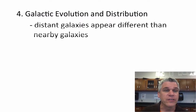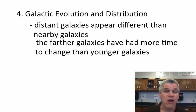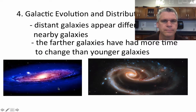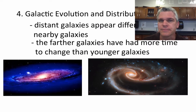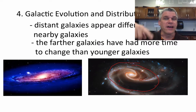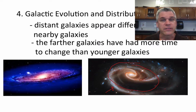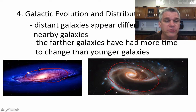We'd also look at galactic evolution and their distribution. Distant galaxies appear different than nearby galaxies. Here are two spiral galaxies — by spiral, we see that the stars within the galaxies are spinning. Which of these do you think is the older galaxy? The older one has stars on the outer edge being thrown off from the center, like ice skaters in a row where the outer ones get thrown off because they're moving so fast. Whereas the younger galaxy on the left still has spirals that are pretty tight.